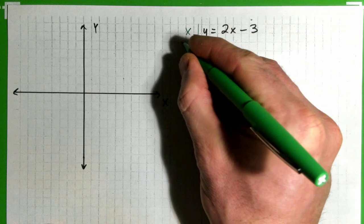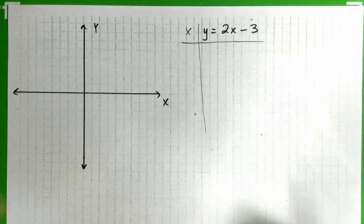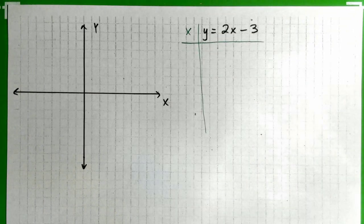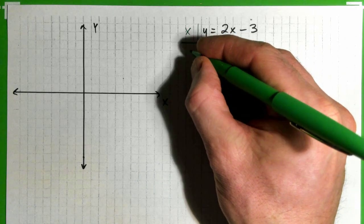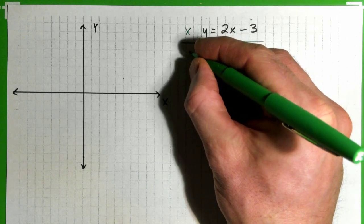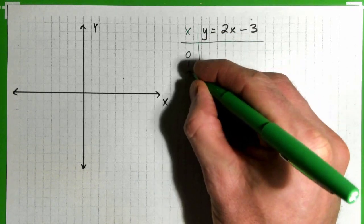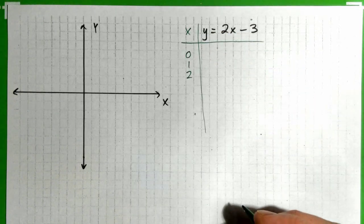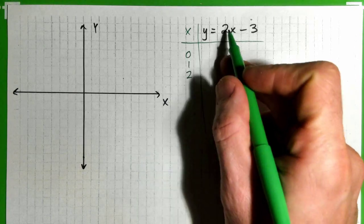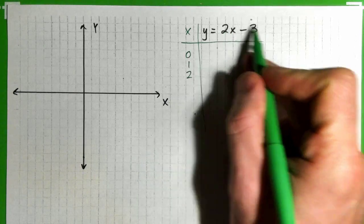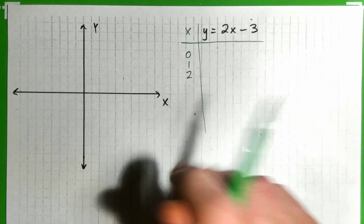All we do is make up x values — they could be anything. I'm just going to use 0, 1, and 2. We're going to plug these x values one at a time into the formula to calculate the y values.